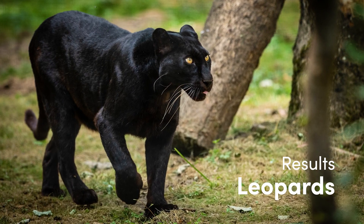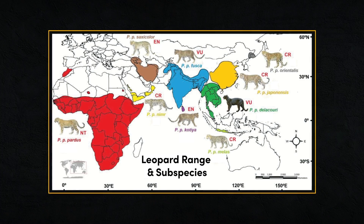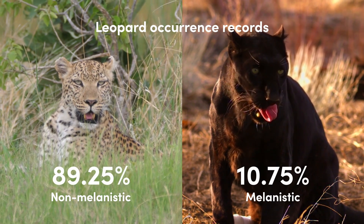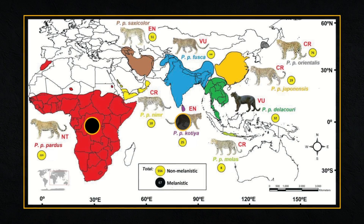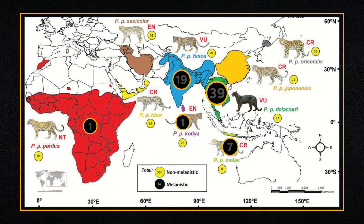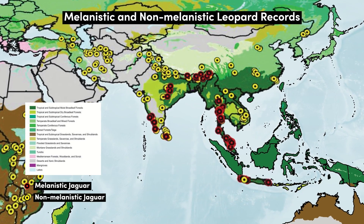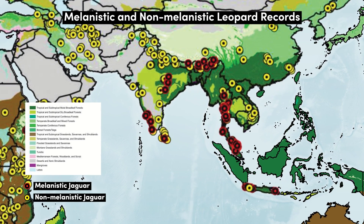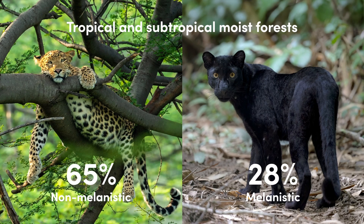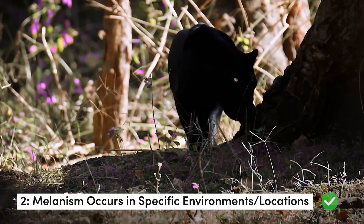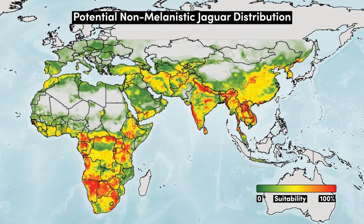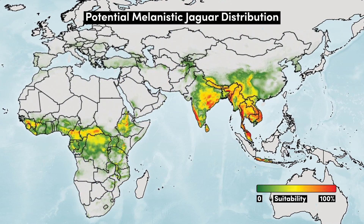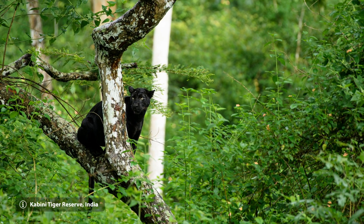The results for the leopard are particularly interesting, thanks to its large range and large number of subspecies. Of the 623 occurrence records for leopards, 10.75% were from melanistic individuals, and melanism occurred in 5 of the 9 subspecies, most often in South East Asia. Melanism was most common in tropical and subtropical moist forests, with 88% of the melanistic occurrence records and the highest percentage of melanistic individuals at 30%, suggesting that the occurrence of melanistic leopards is not randomly distributed. The maps show the potential distribution of non-melanistic and melanistic leopards, with predictors relating to moisture showing the strongest correlation.